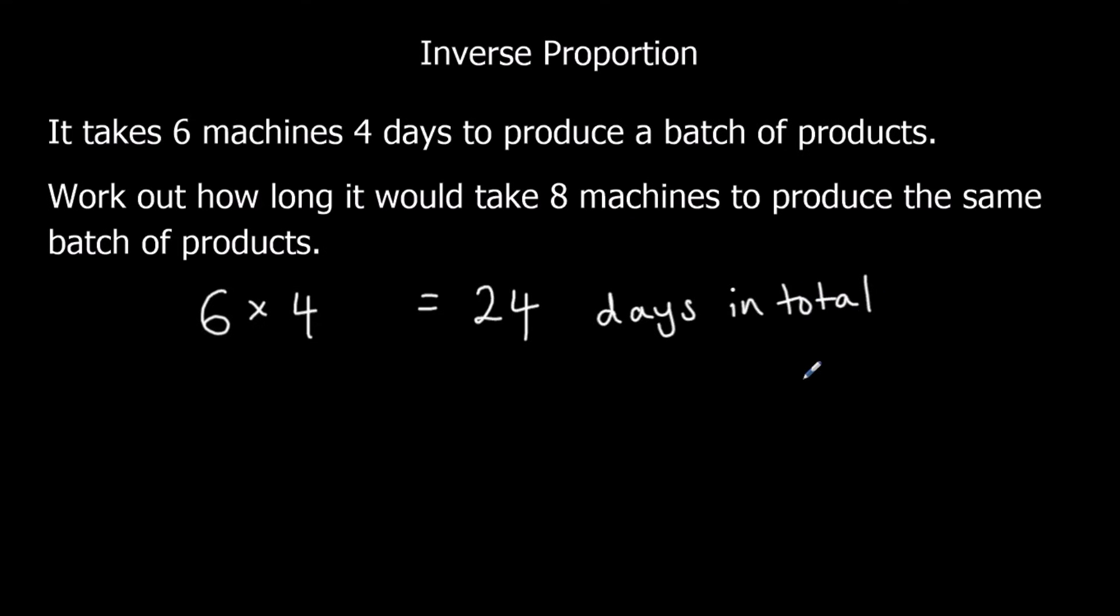So if we only had one machine, it would take it 24 days to produce the products. If we had two machines, they could produce the products in 12 days.